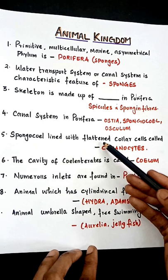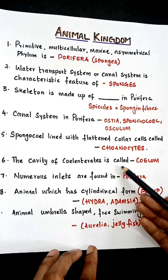The cavity of the coelenterate is called coelom. Numerous inlets are found in Porifera.